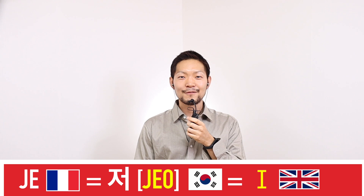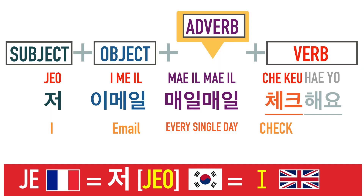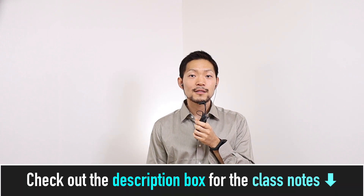Let's practice: I check email every single day in Korean. Put the subject at the beginning: 저 이메일 매일매일 체크해요. Now, you tell me if you can ever forget how to say every day in Korean. From here, I think the following expressions are pretty straightforward and self-explanatory, so I'm gonna read them out twice for each. Give it a try and see if you can understand them. If you have any questions, you can leave them in the comment section below.